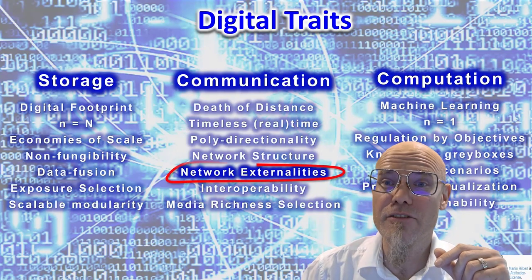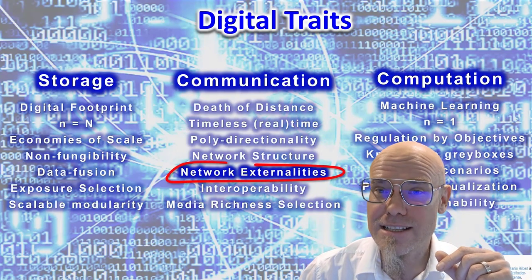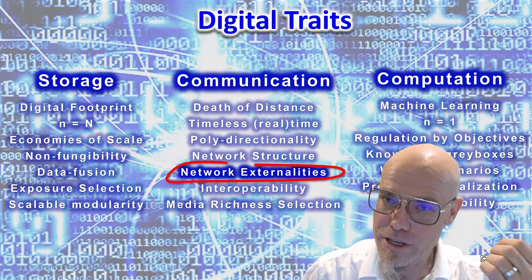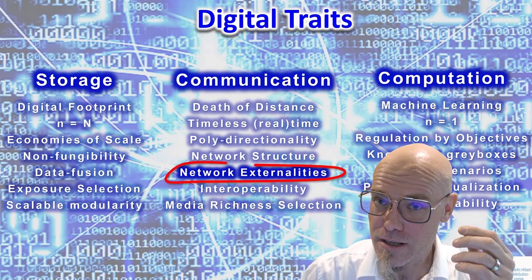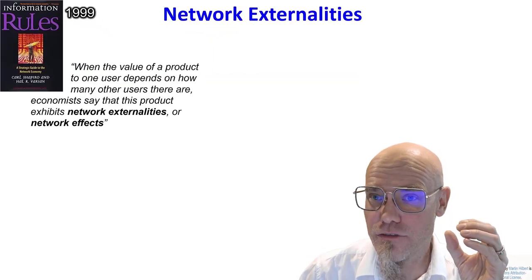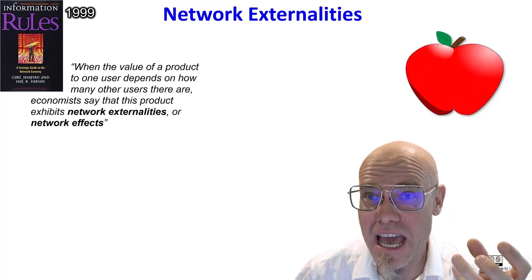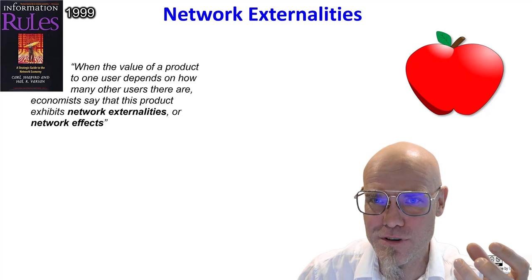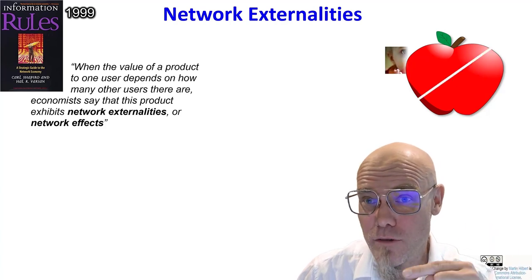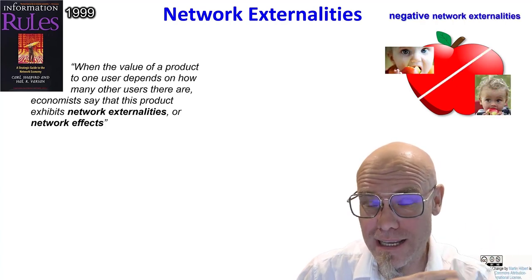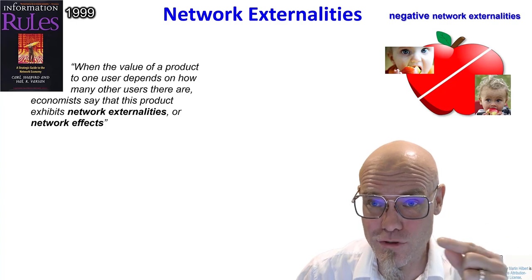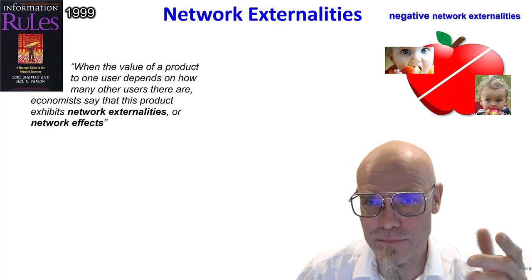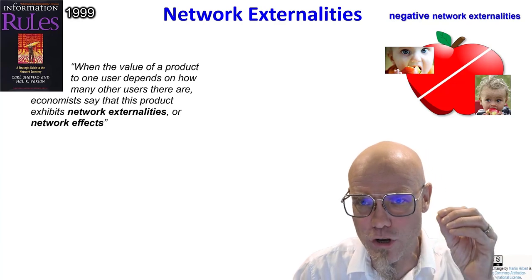Information networks have network externalities, which is very important and very different from the previous analog industrial age. In the industrial age, if you have something like an apple or a car — something really tangible, a product that you can touch — if you have more people using it, everybody gets less. So if two people share an apple, everybody gets half an apple. The more people you have using it, it's the law of scarcity.